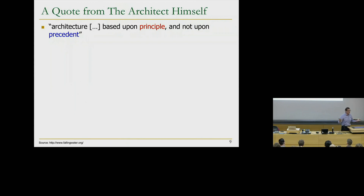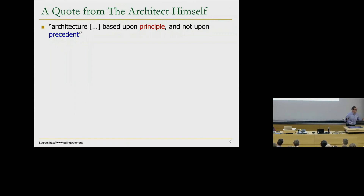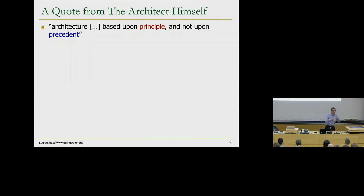Precedent may be wrong. There have been legal systems where law was discriminating against people. Does that mean the precedent is correct? And principles may also be wrong. So it's good to keep that in mind. I think architecture in general is a very broad field, and computer architecture is a smaller incarnation of it, but it's good to think about the philosophical implications of how you're designing a system going into the future.